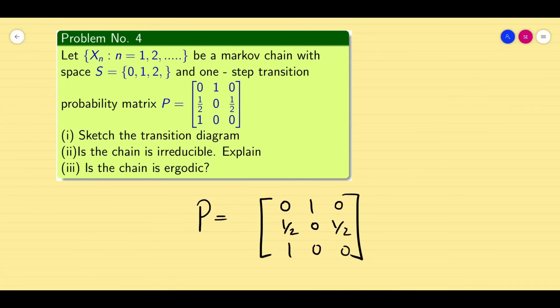Dear friends, today we are going to see problem number 4. This is a direct problem. You will be given a transition probability matrix TPM. They are telling you to find the transition diagram, check whether the chain is irreducible or not, and finally, ergodic or not.